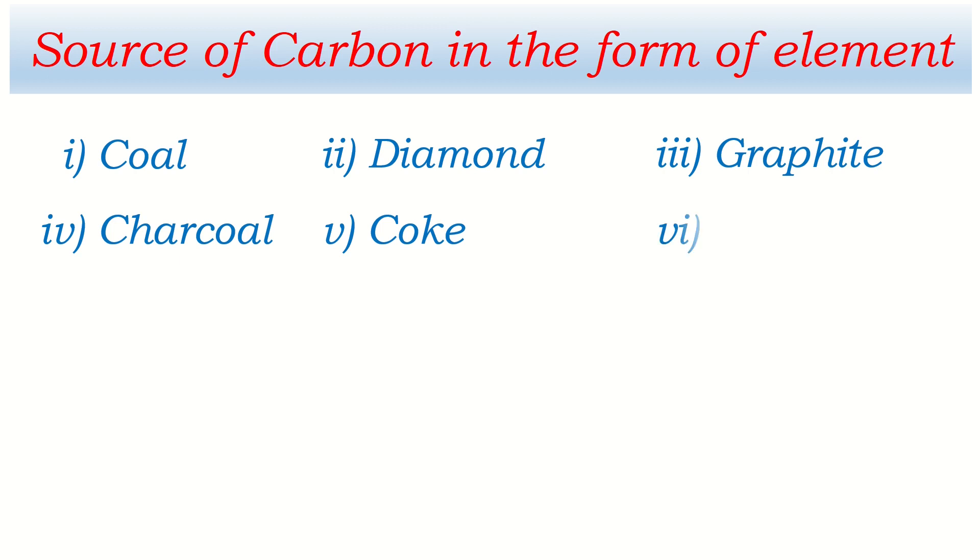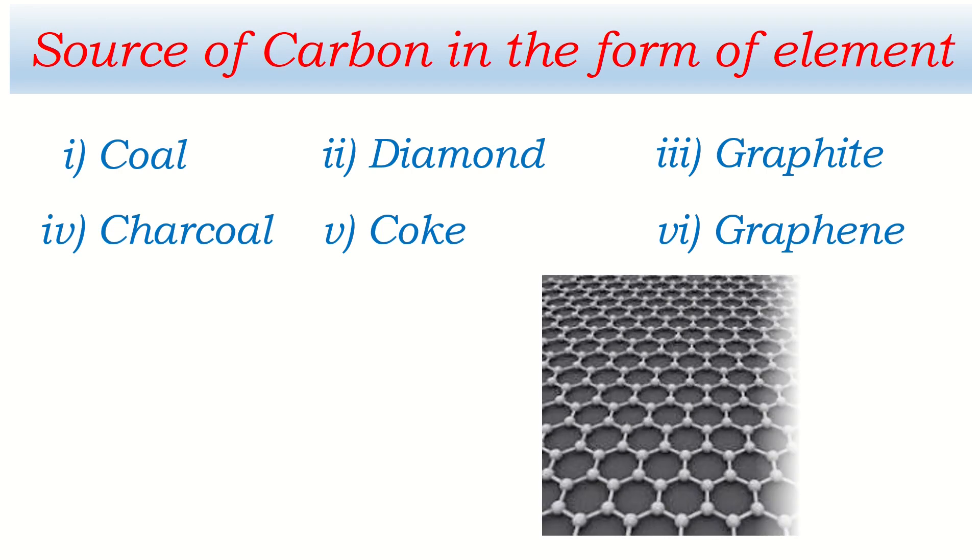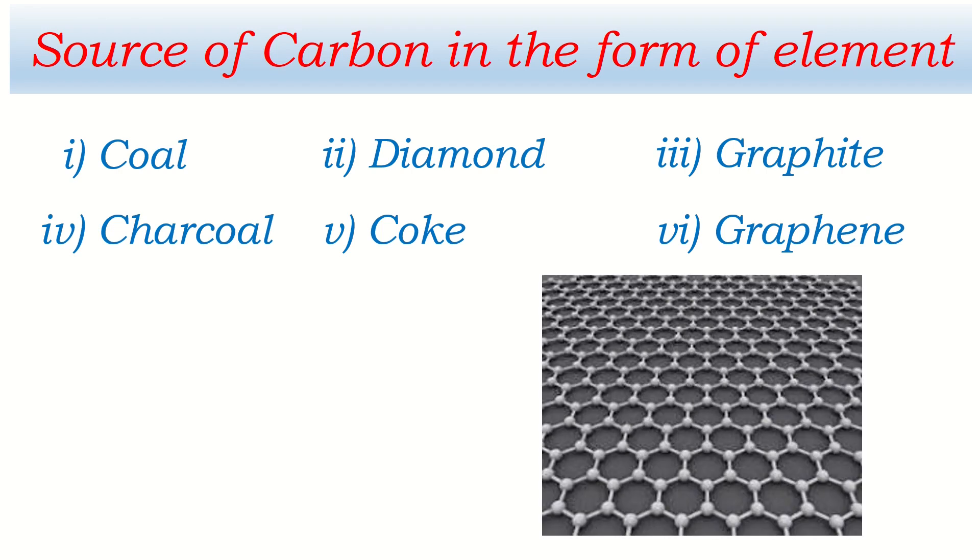And another one, graphene. Graphene is single layered carbon and its shape is hexagonal like this. These all are the sources of carbon in which carbon is present as an element not combined with other.